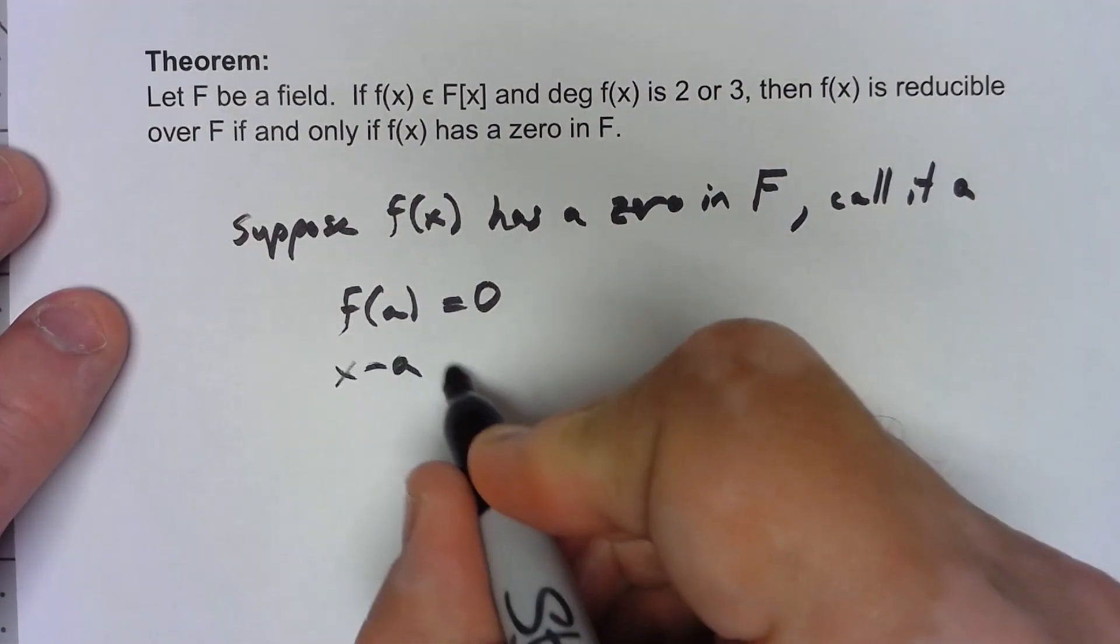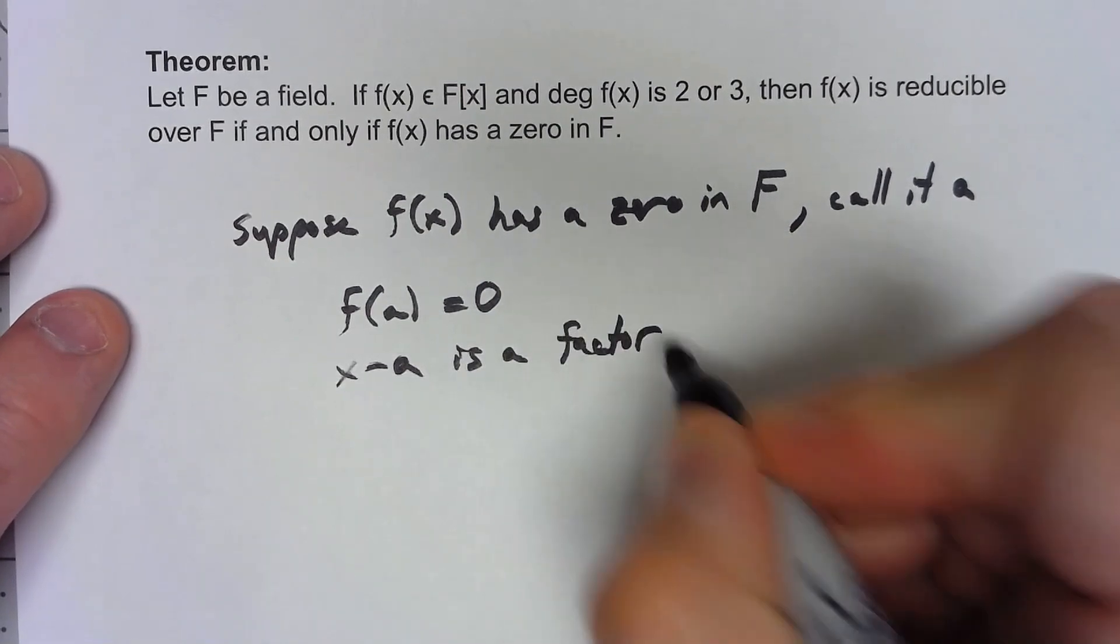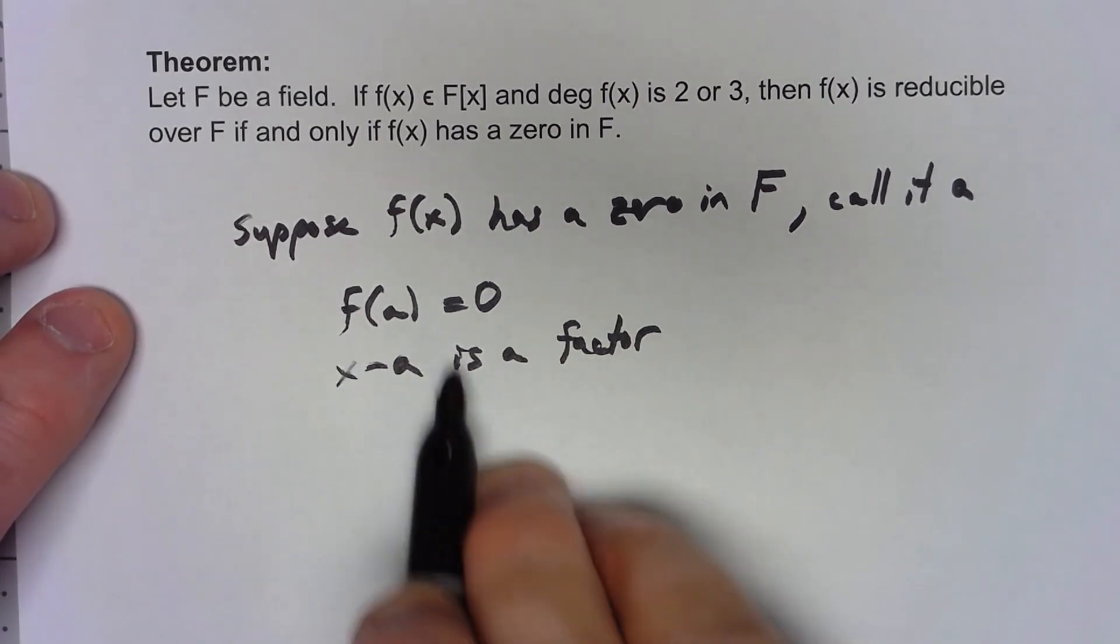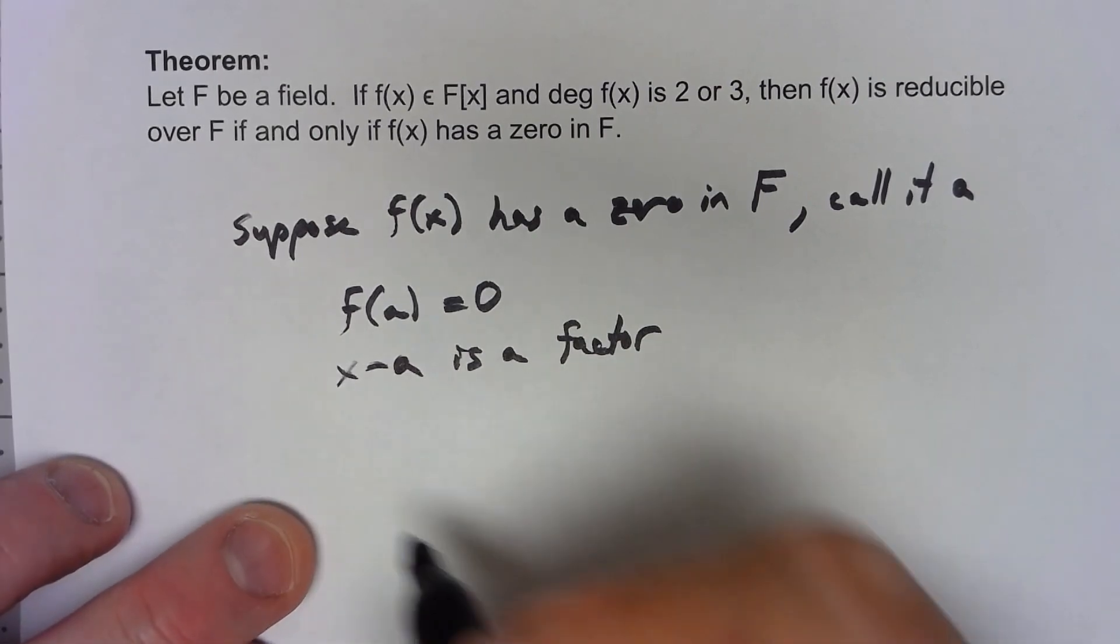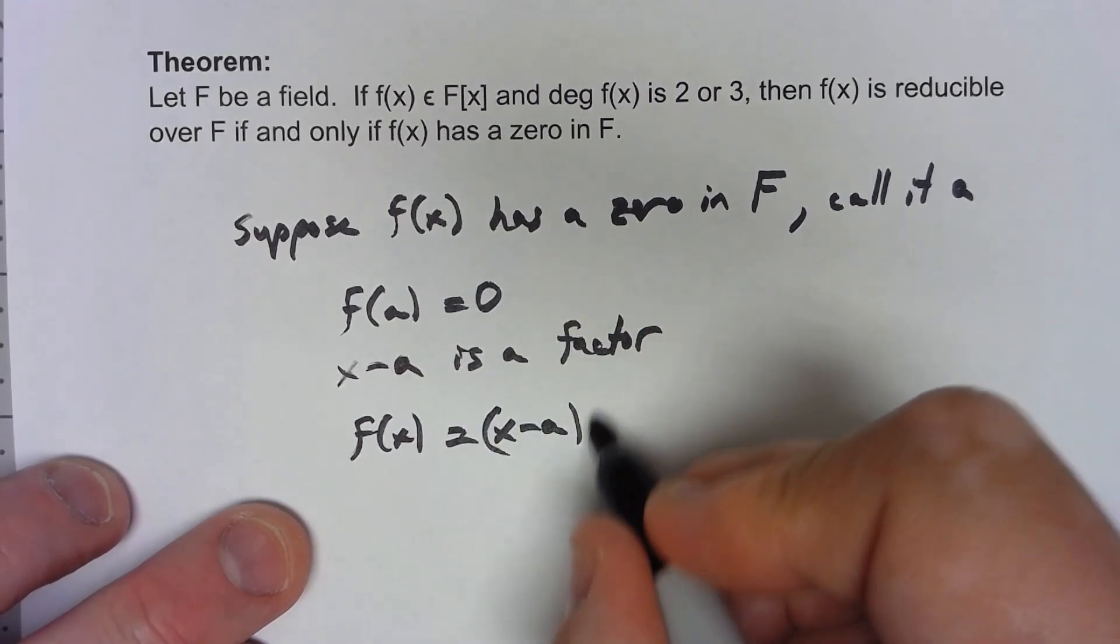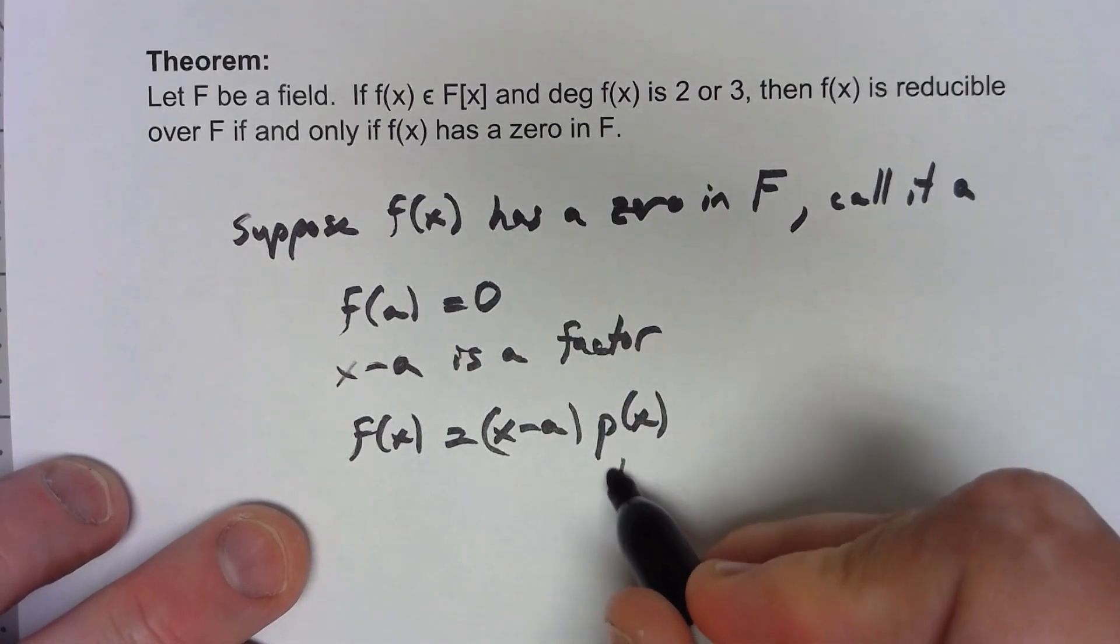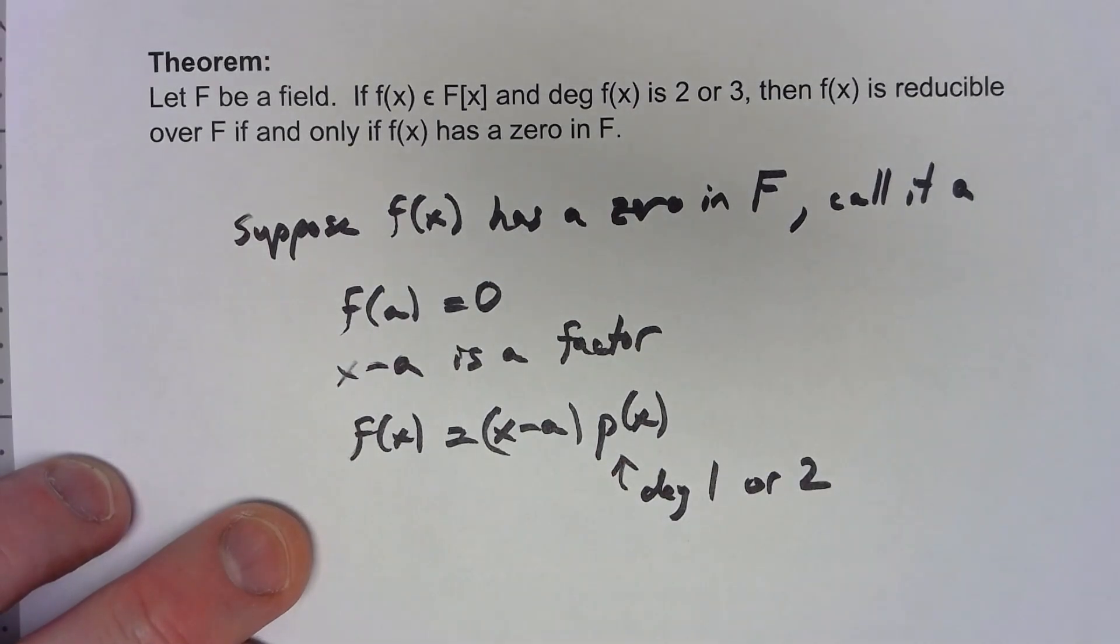But based on some of those consequences of the division algorithm that means that x minus a is a factor, and that certainly can't be a unit. And so there we go we know that this thing, our f(x) has to equal x minus a times something else. Because the degree is 2 or 3 this thing has to have degree 1 or 2 and we've got a non-trivial way neither one of these things can be a unit.